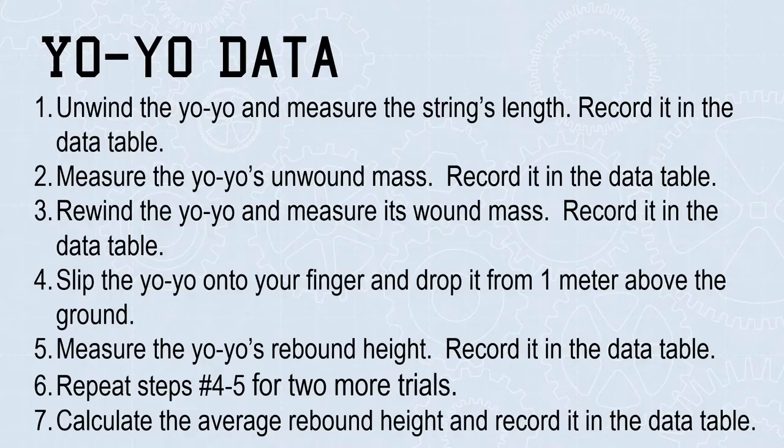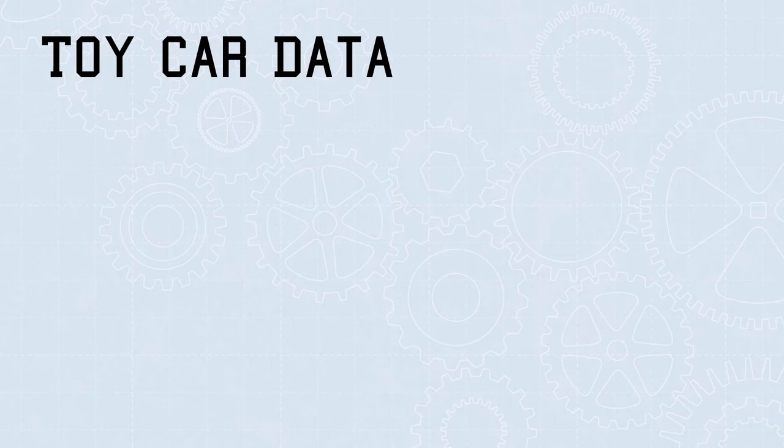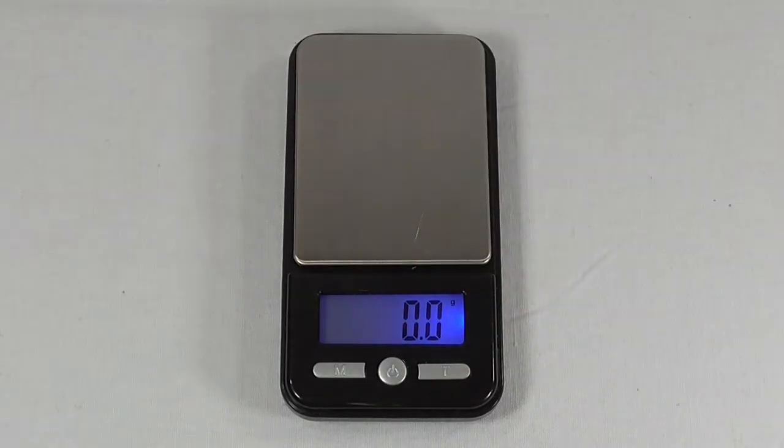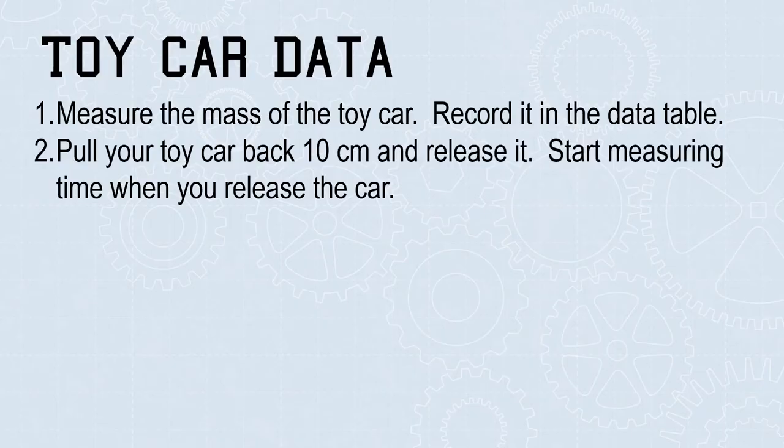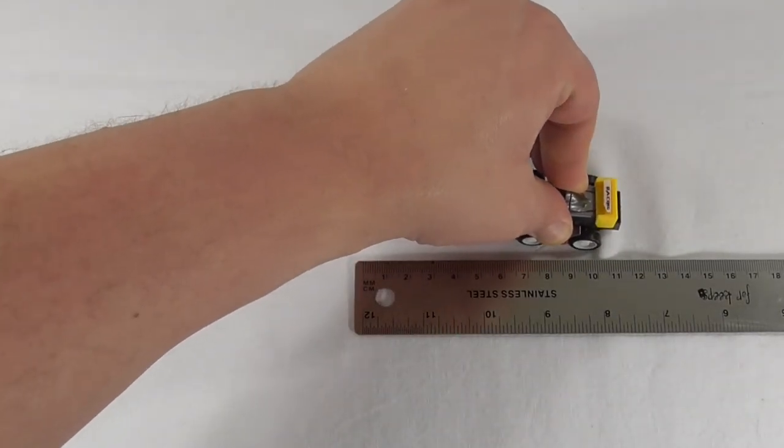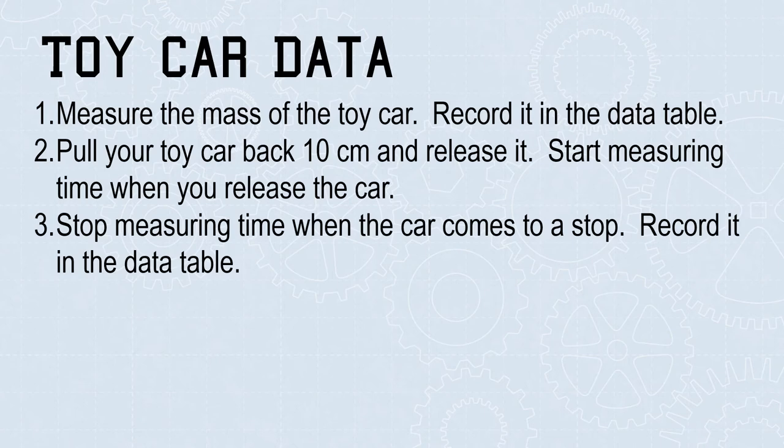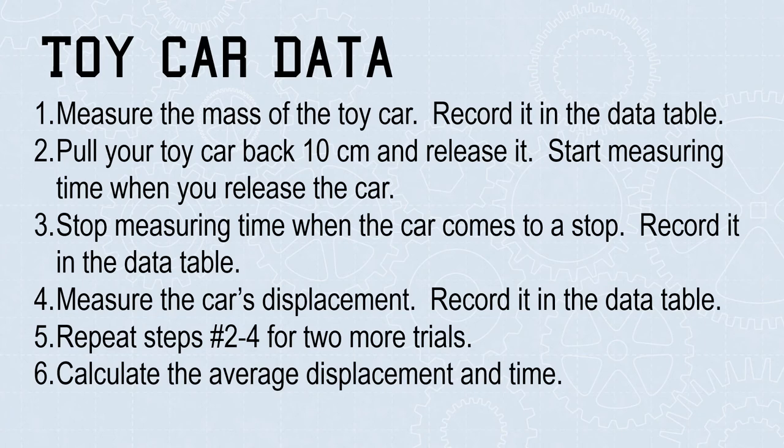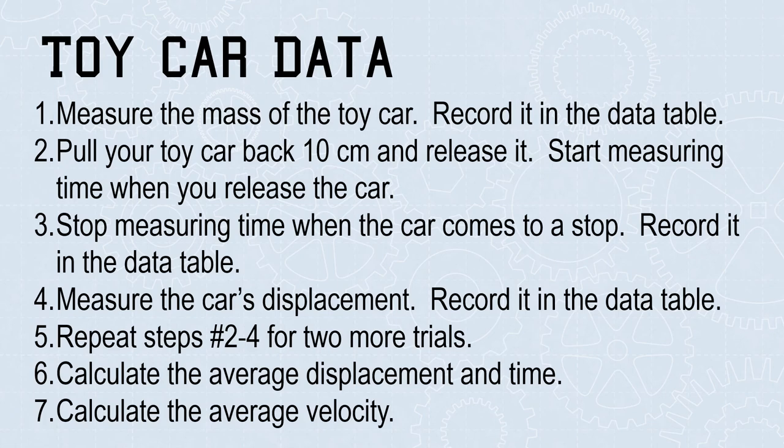To collect the data for your toy car lab, follow these simple steps. 1. Measure the mass of the toy car. Record it in the data table. 2. Pull your toy car back 10 centimeters and release it. Start measuring the time when you release the car. 3. Stop measuring the time when the car comes to a stop. Record it in the data table. 4. Measure the car's displacement. Record it in the data table. 5. Repeat steps 2 through 4 for two more trials. Step 6. Calculate the average displacement in time. And then 7. Calculate the average velocity. To calculate the average velocity, divide the average displacement by the average time.